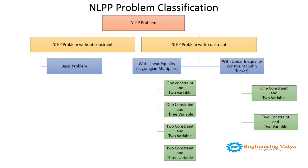For inequality constraint problems solved with the Kuhn-Tucker method, there are only two types: one constraint two variable, and two constraint two variable. This tree diagram shows how the categorization of the problems is made.